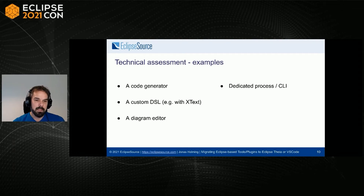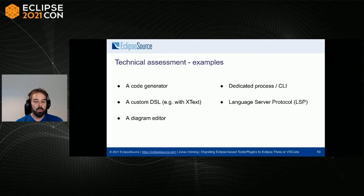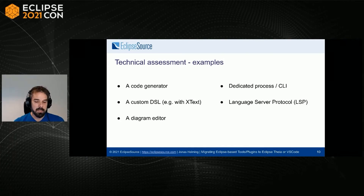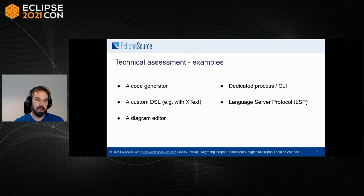Next example: a custom DSL, for example done with Xtext. For web-based tools, you would typically use the language server protocol for language support. If you used Xtext, the good news is you can also generate a language server with Xtext. If you have another custom DSL or custom logic, you might even consider using the language server protocol for your desktop tool in parallel to migrating to the cloud, since the Eclipse desktop version also supports the language server protocol. You can then base both the desktop tool and the new web-based tool on the same language server implementation.